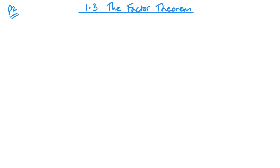Welcome back to P2. Today we are looking at unit 1.3, the factor theorem. This is just a simple or quick way to find linear factors of a polynomial. Basically, if we have a factor, we know that our f(x) would equal 0.